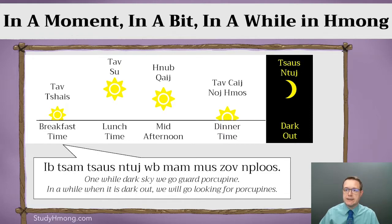We have tā chai — that's breakfast time, roughly. Tā shū — that's lunchtime, when the sun is at its highest point. Then nǒ qai — that's mid-afternoon. Literally, nǒ qai translates to 'when the sun is crooked,' meaning when the sun is starting to fall and work towards setting.